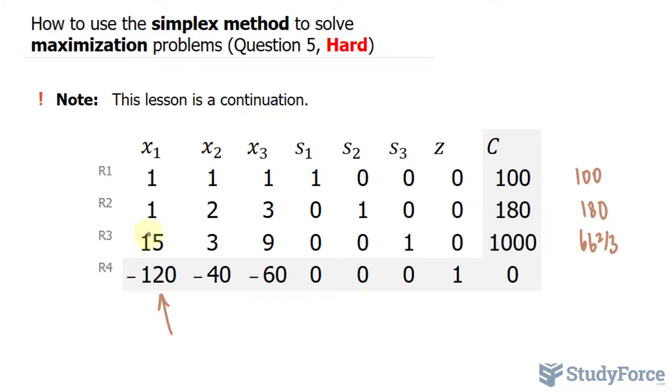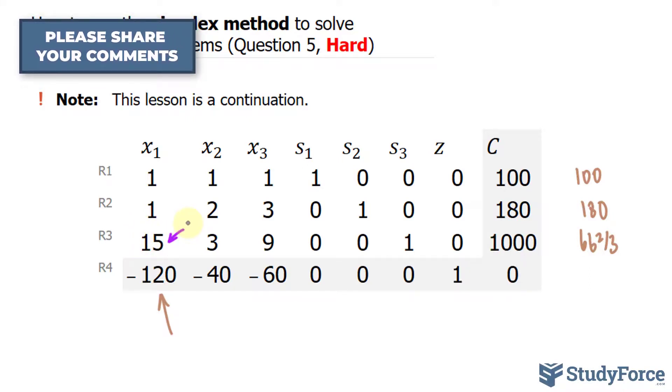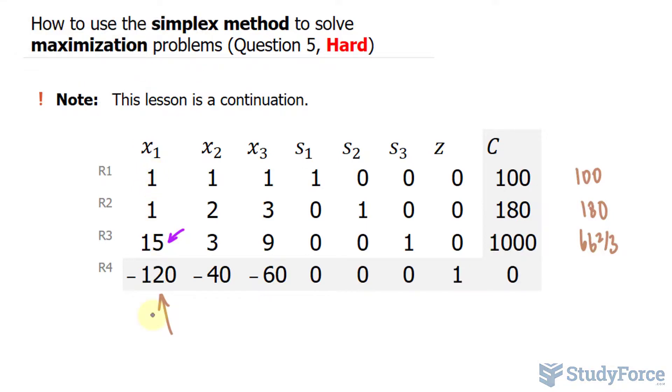Therefore, this number 15 will be considered our pivot number, and we'll use row 3 to make 1, 1, and negative 120 into zeros.